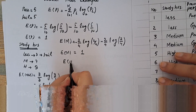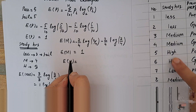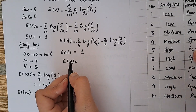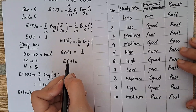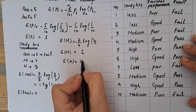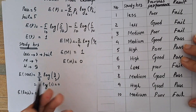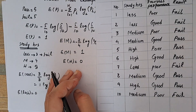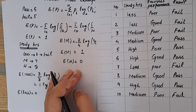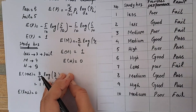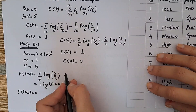Now let's evaluate the entropy of high. In the case of high study hours, all students pass — none of them fail. So entropy of high equals 0. You can also justify this mathematically. In this way, we have evaluated the entropy of all samples in the first feature vector, study hours.